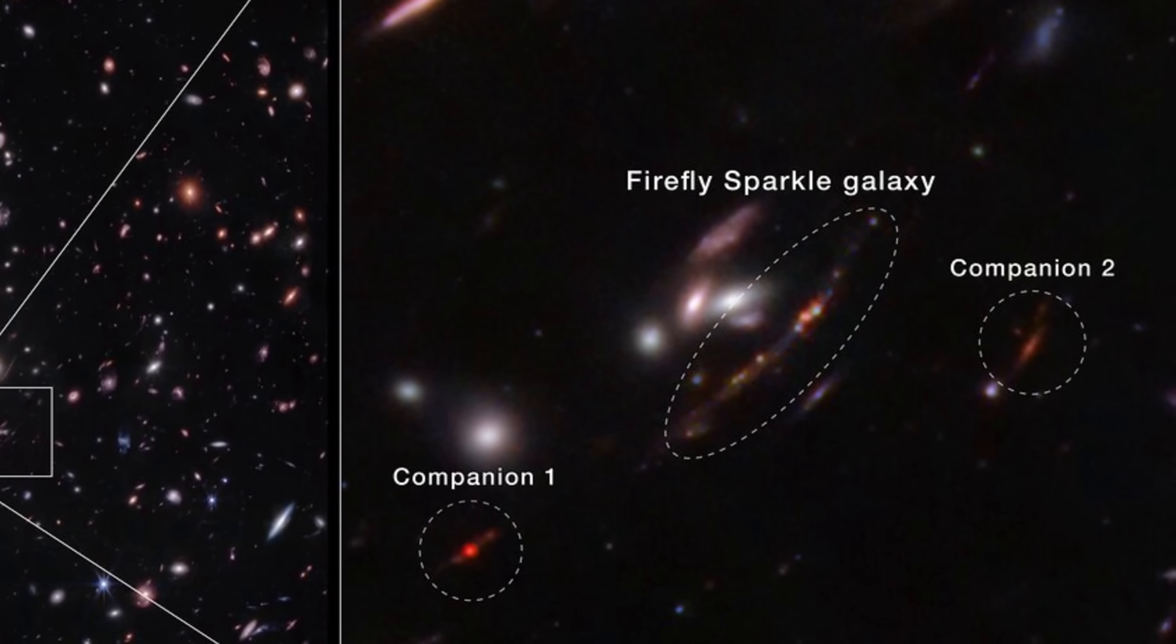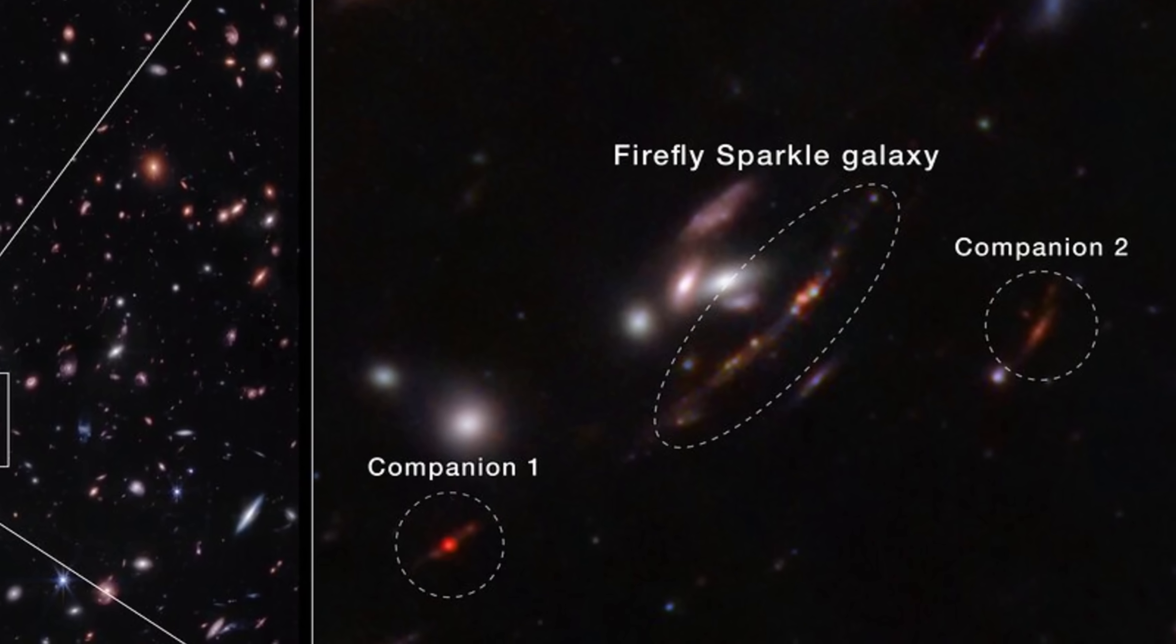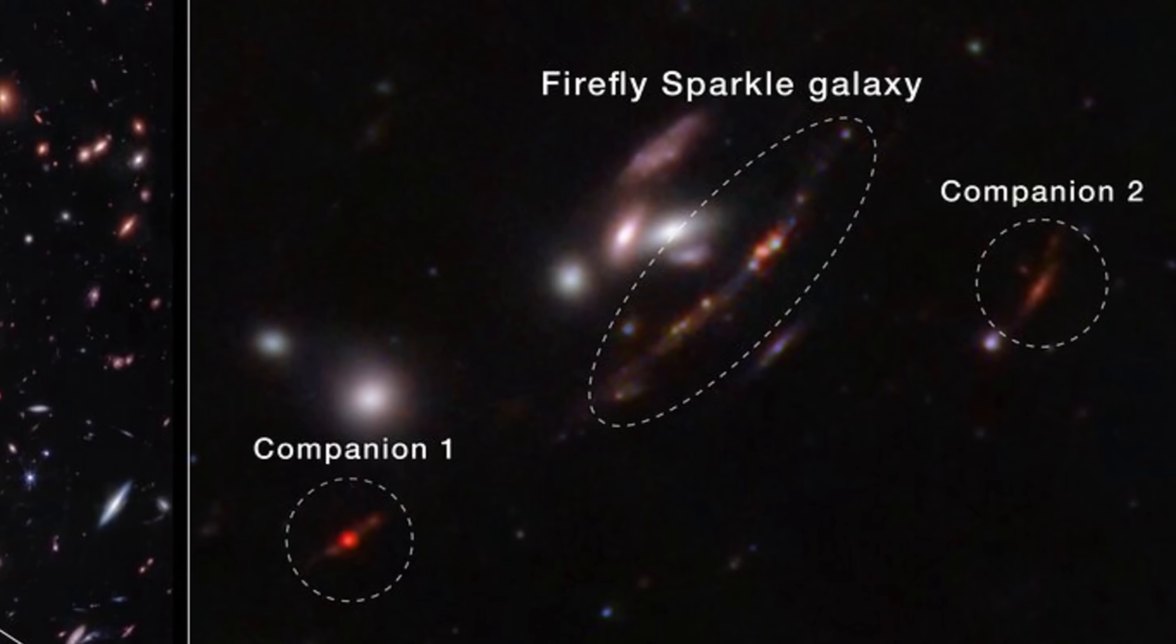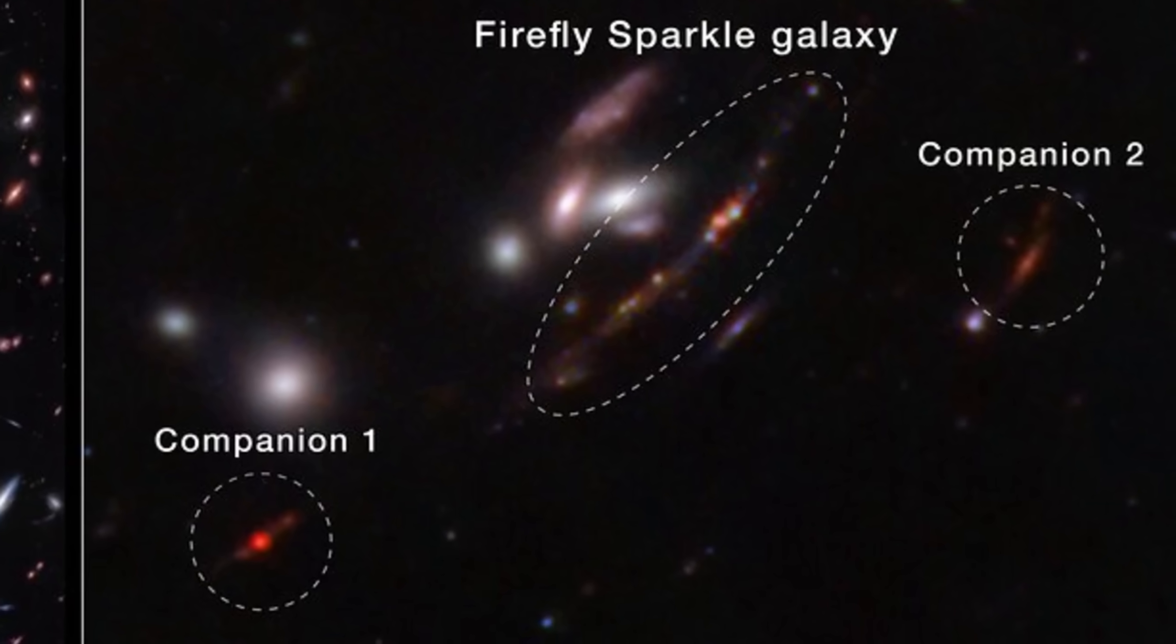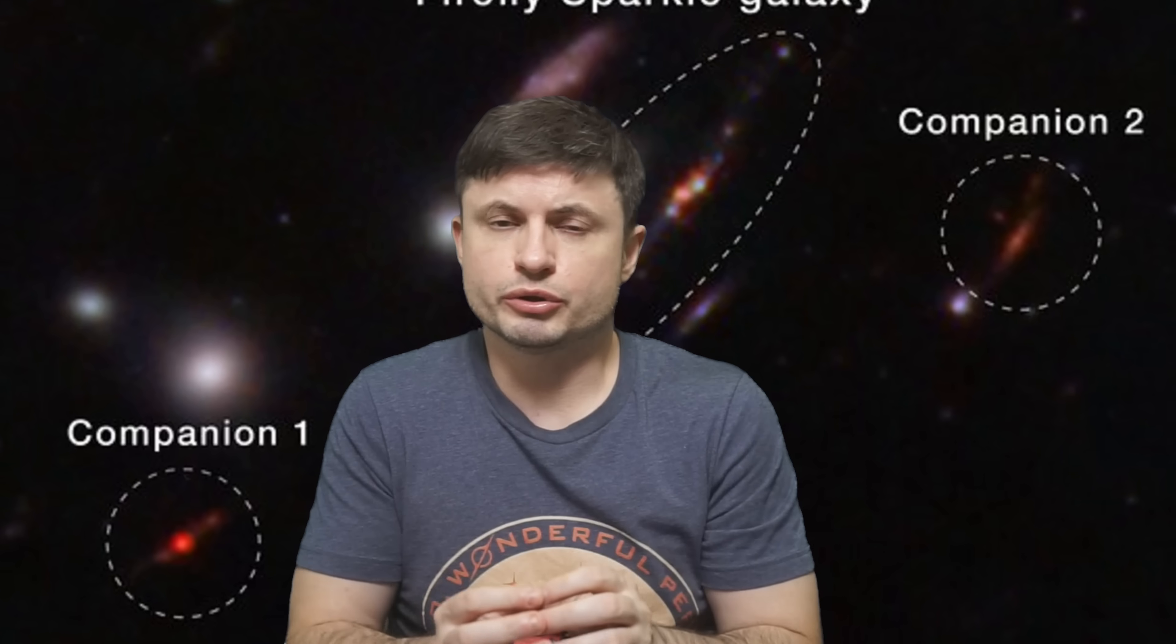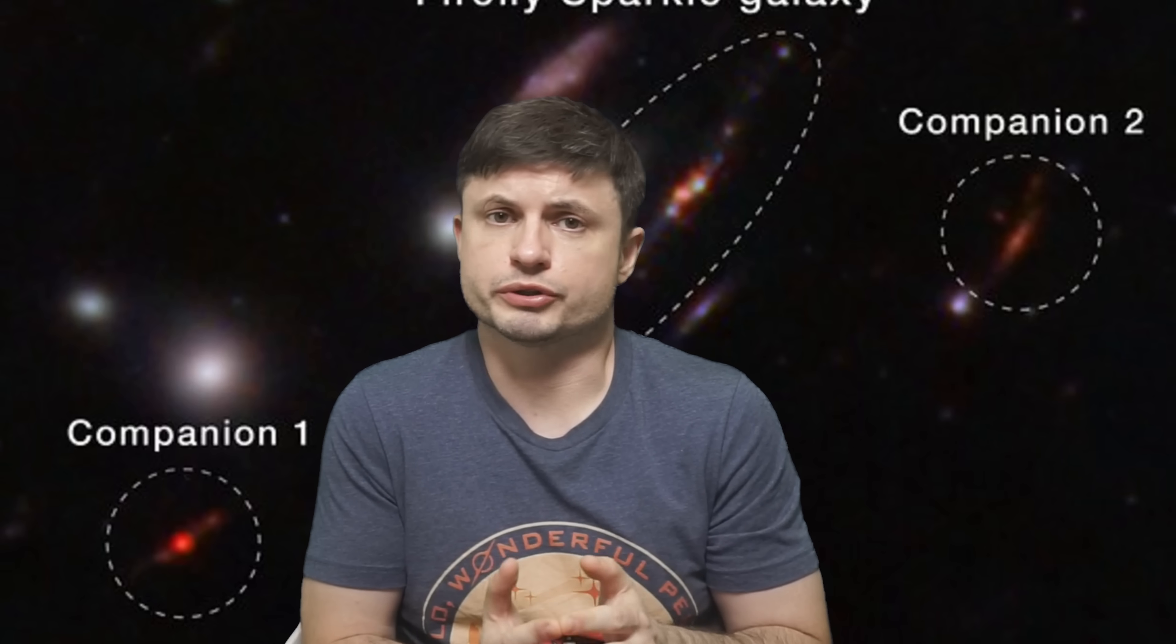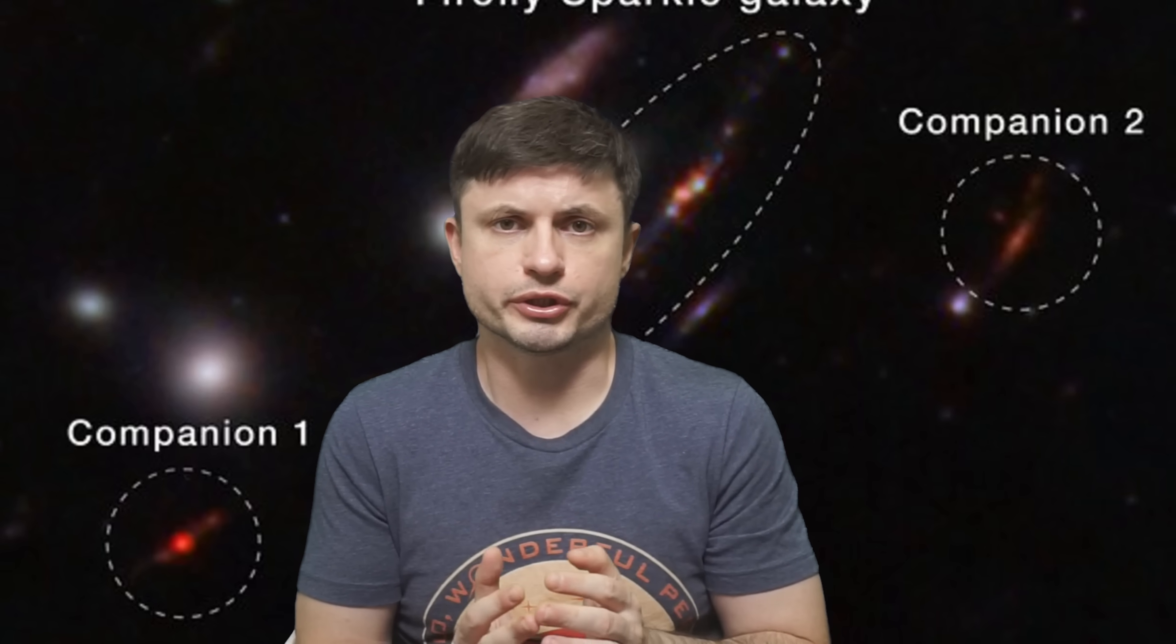But as you can see in this image, there are two more things here that are kind of exciting: two companions. One approximately 6,500 light years away and one approximately 42,000 light years away. And so in essence we're looking at some kind of a triple galactic system where these three galaxies will most likely become one in the near future.